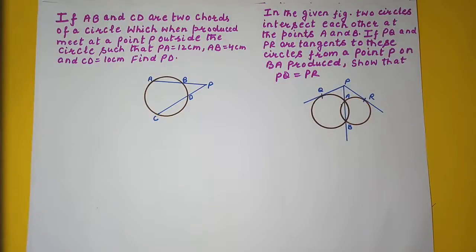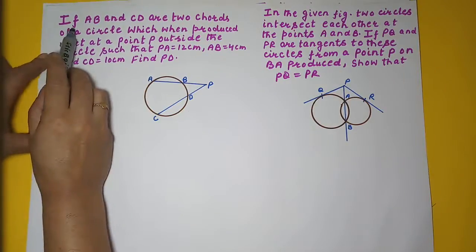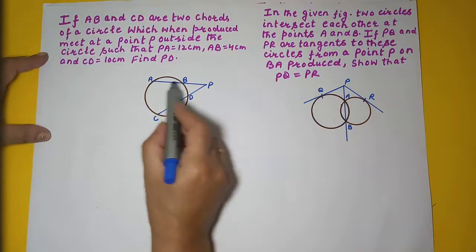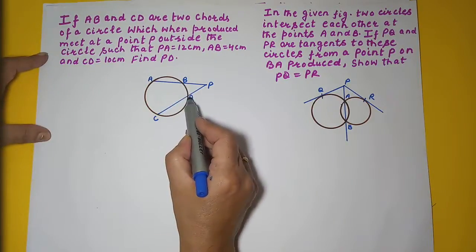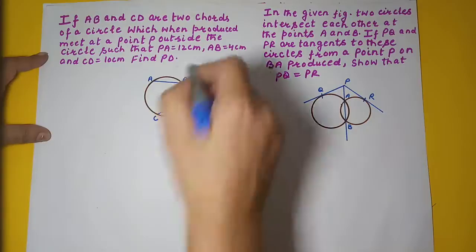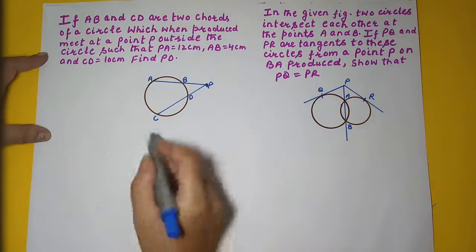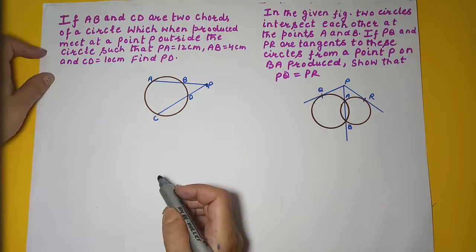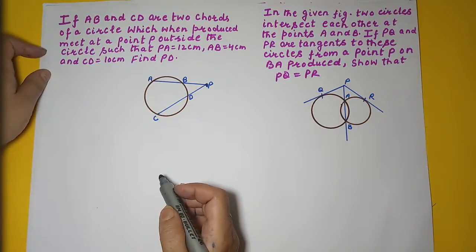In this video, we are continuing with intersecting chords and tangents. Here, AB and CD are two chords of a circle which, when produced, meet at point P. The chords are meeting externally at point P, outside the circle.